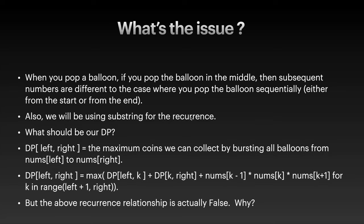How should we define dp? This will have two states: left and right. We want dp of left and right where left will be 0 and right will be the length of the array. dp[left][right] is just the maximum coins you can collect by bursting all balloons from nums[left] to nums[right].